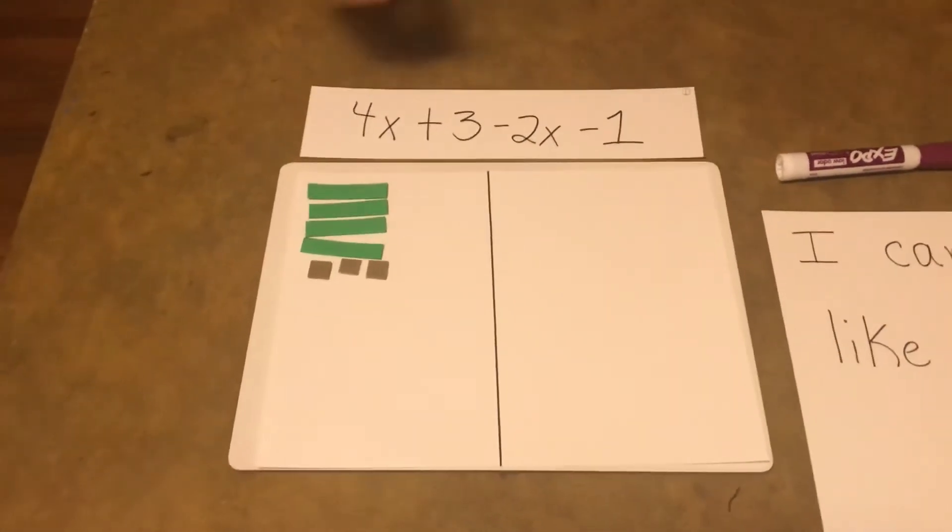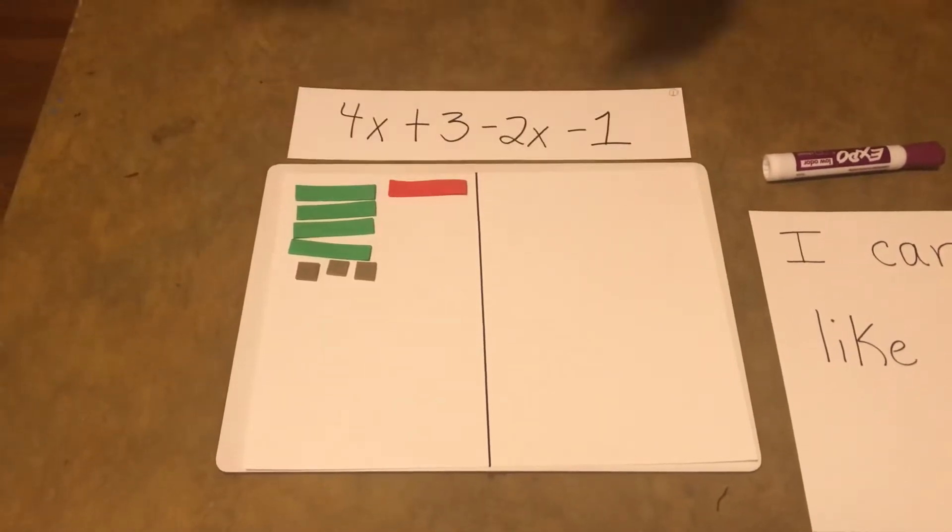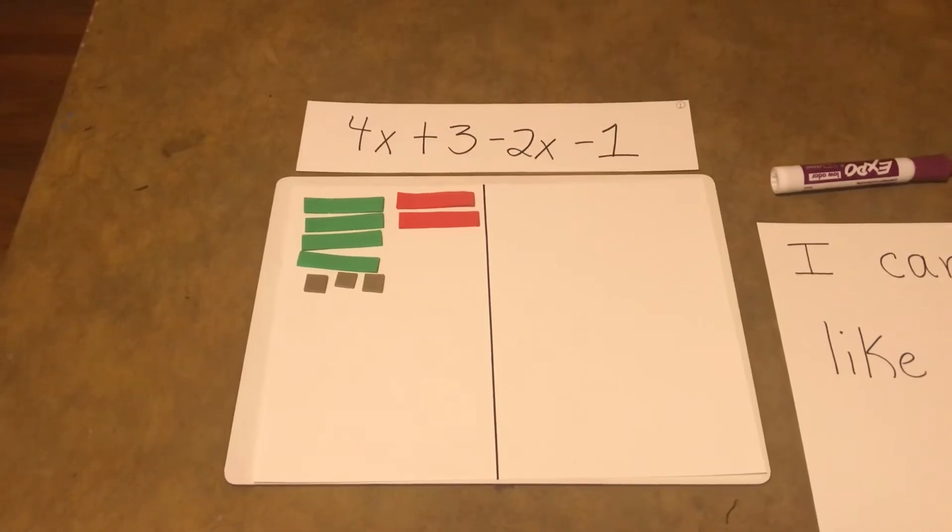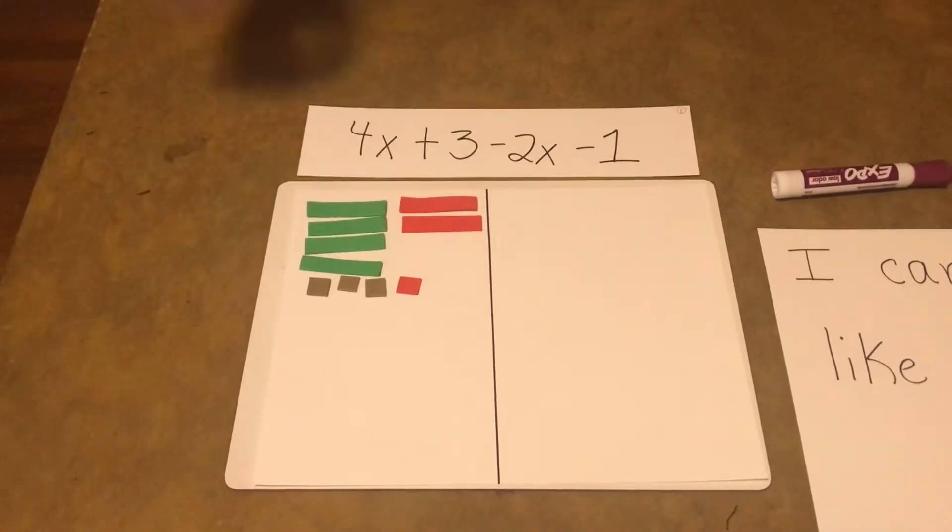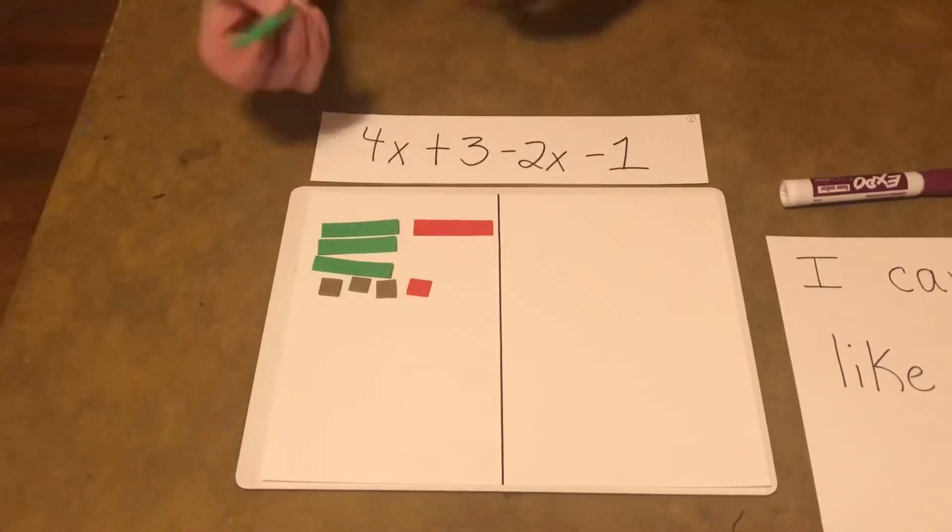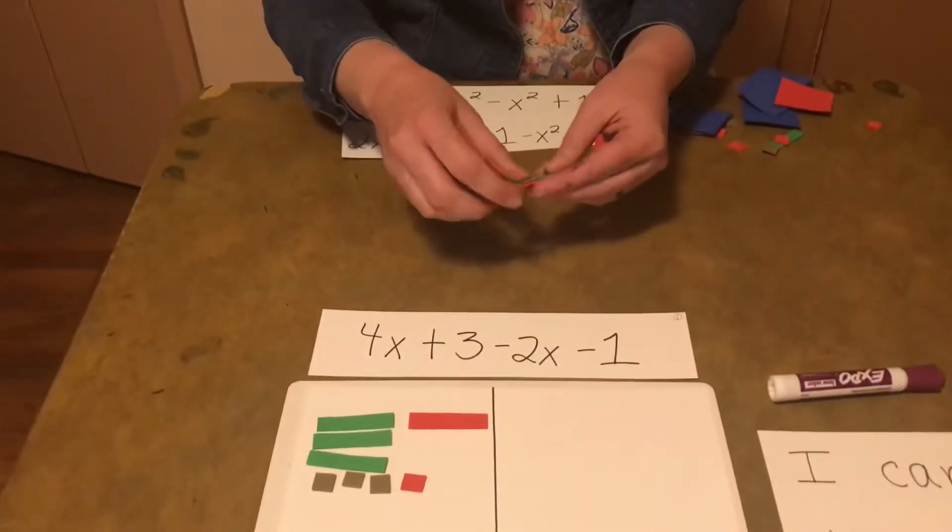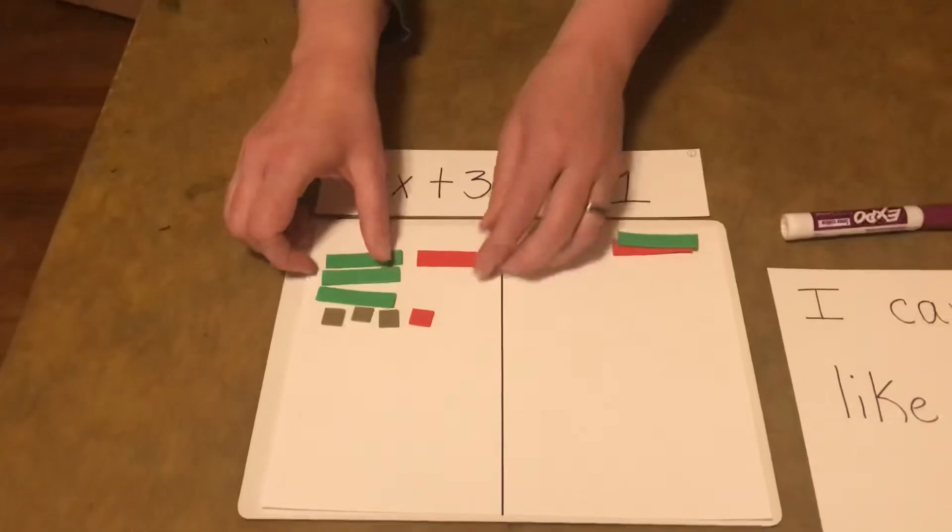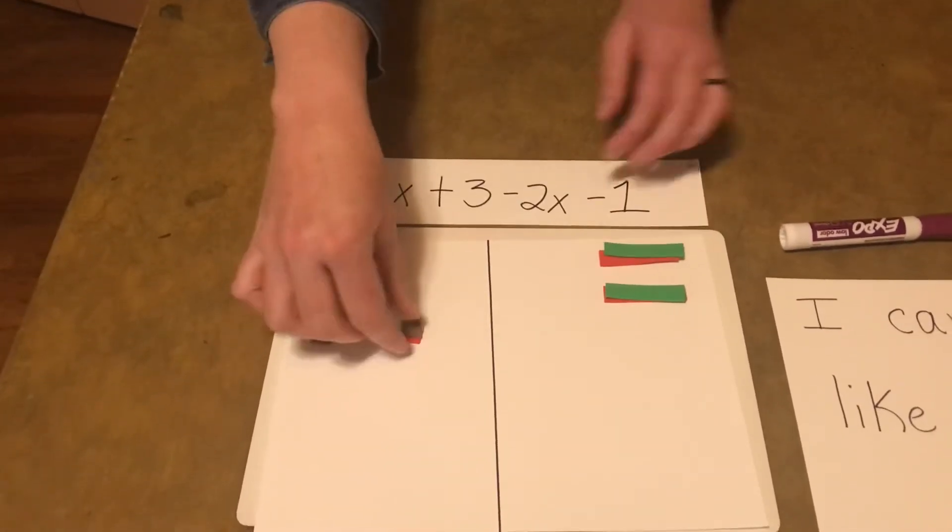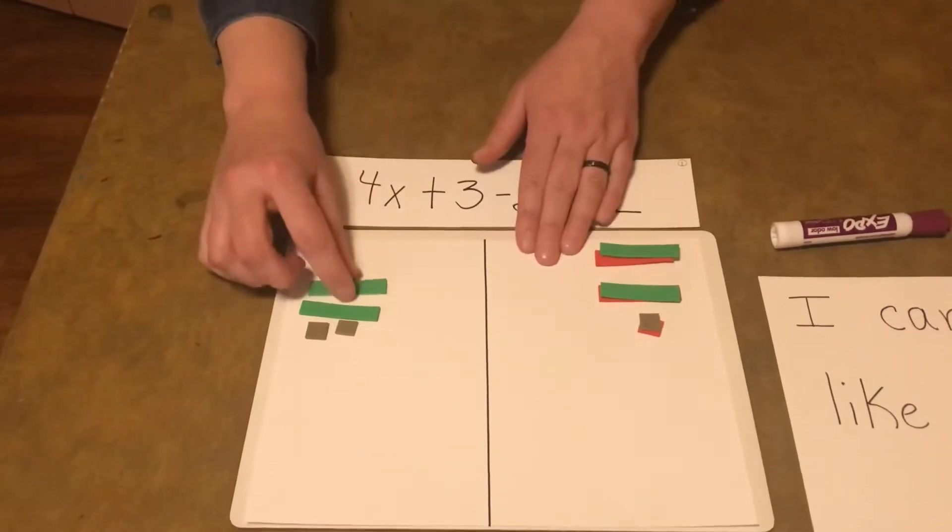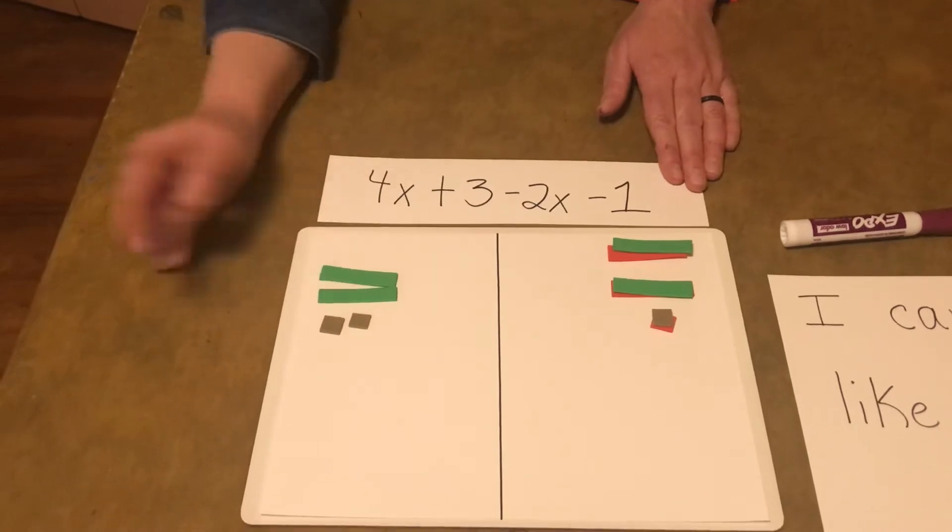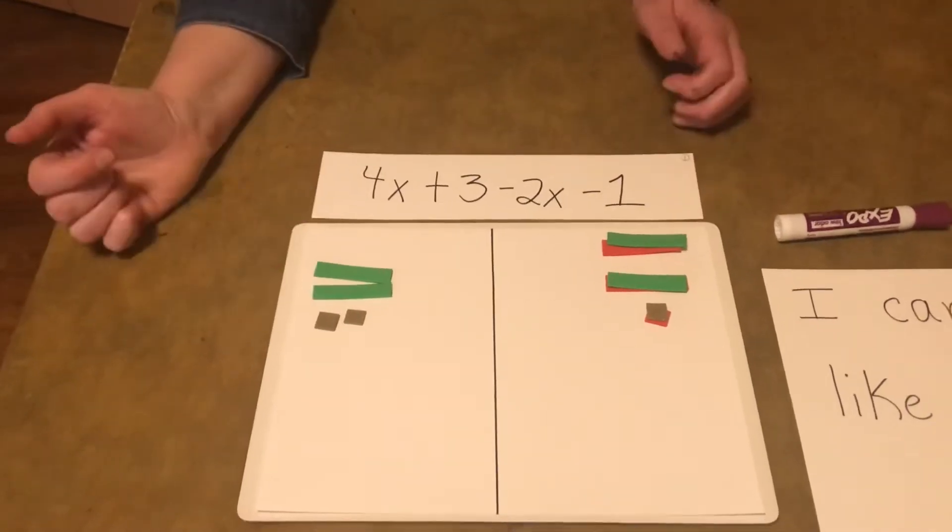So here's our negative X minus 1. So it's red. And then we're just going to start zeroing out. X minus X equals zero. We can do the same here. And we know that 1 minus 1 equals zero. And so what we have left over is 2 of the greens or 2 of the X's plus 2 of the browns. So 2X plus 2.